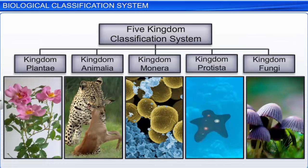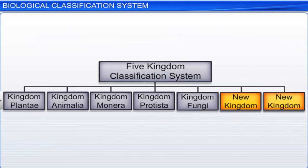Therefore, the five kingdom classification system was evolved with an advancement in our understanding of the characteristics of organisms and their phylogenetic relationships. Depending on more such discoveries, the classification system may further need to be evolved in future.